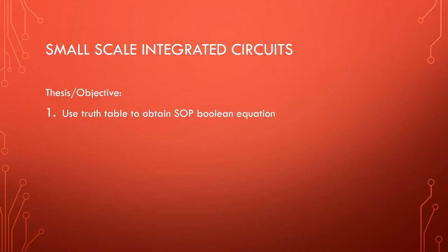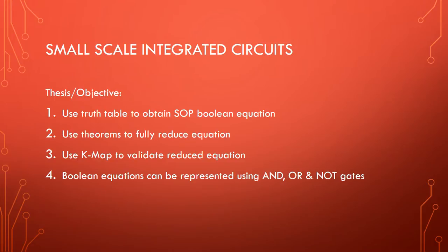First, we will use the truth table to obtain an SOP Boolean equation, and then use the theorems to fully reduce the equation. We will also use a Karnaugh map to validate the reduced equation and prevent mistakes. Our thesis is this Boolean equation can be represented using AND, OR, and NOT gates, and also NAND gates, as any Boolean equation can be implemented as a NAND gate-only circuit.